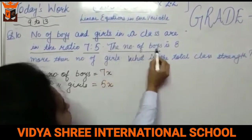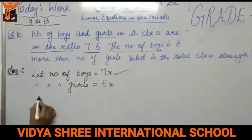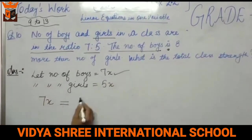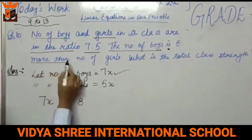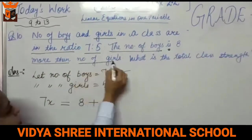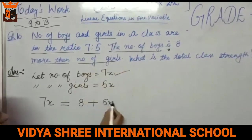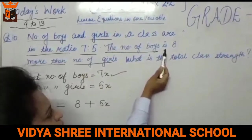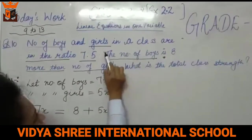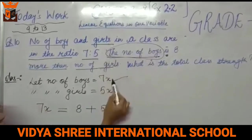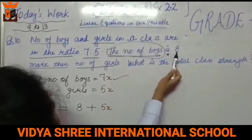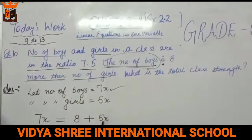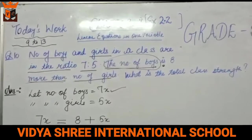Now, what is given? Number of boys is 7x. 'Is' means equal. 8 more than — 'more than' means plus — number of girls, meaning 5x. In mathematics, words like 'is', 'are', 'those' are replaced by the equals sign. So we form the statement: 7x equals 8 plus 5x.